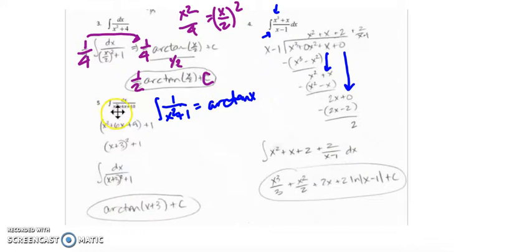So if I complete the square, I need x squared plus 6x plus 9. That 9 is 6 over 2 and then squared. And then I have this extra plus 1 out here, which is fine.